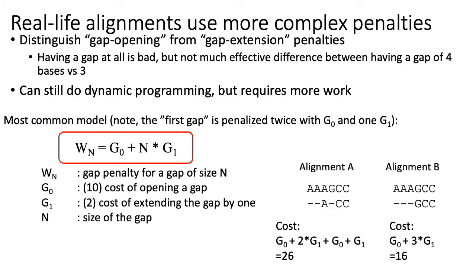Going back to the idea of gaps being less common in evolution than substitutions: in real-world scoring schemes, people typically distinguish between a gap opening and a gap extension. The intuition is that introducing a gap into an alignment is bad because indels happen less frequently than substitutions. But having a gap of length 50 bases is not functionally much worse than having a gap of size 51.